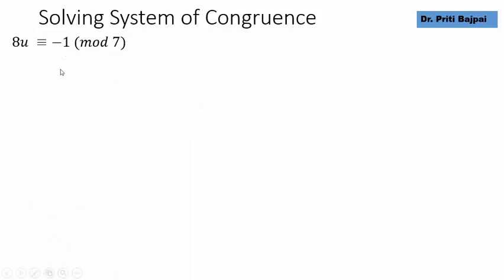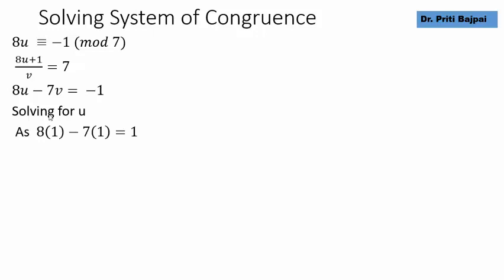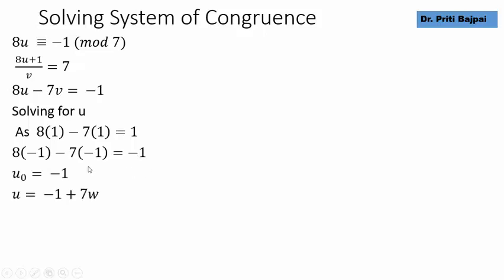Substituting gives 2 + 8U ≡ 1 mod 7, so 8U ≡ −1 mod 7. Writing as an equation: 8U − 7V = −1. We observe that 8(1) − 7(1) = 1, so multiplying by −1 gives 8(−1) − 7(−1) = −1. Thus U₀ = −1, and the general solution is U = −1 + 7W. V comes out as −1 + 8W.